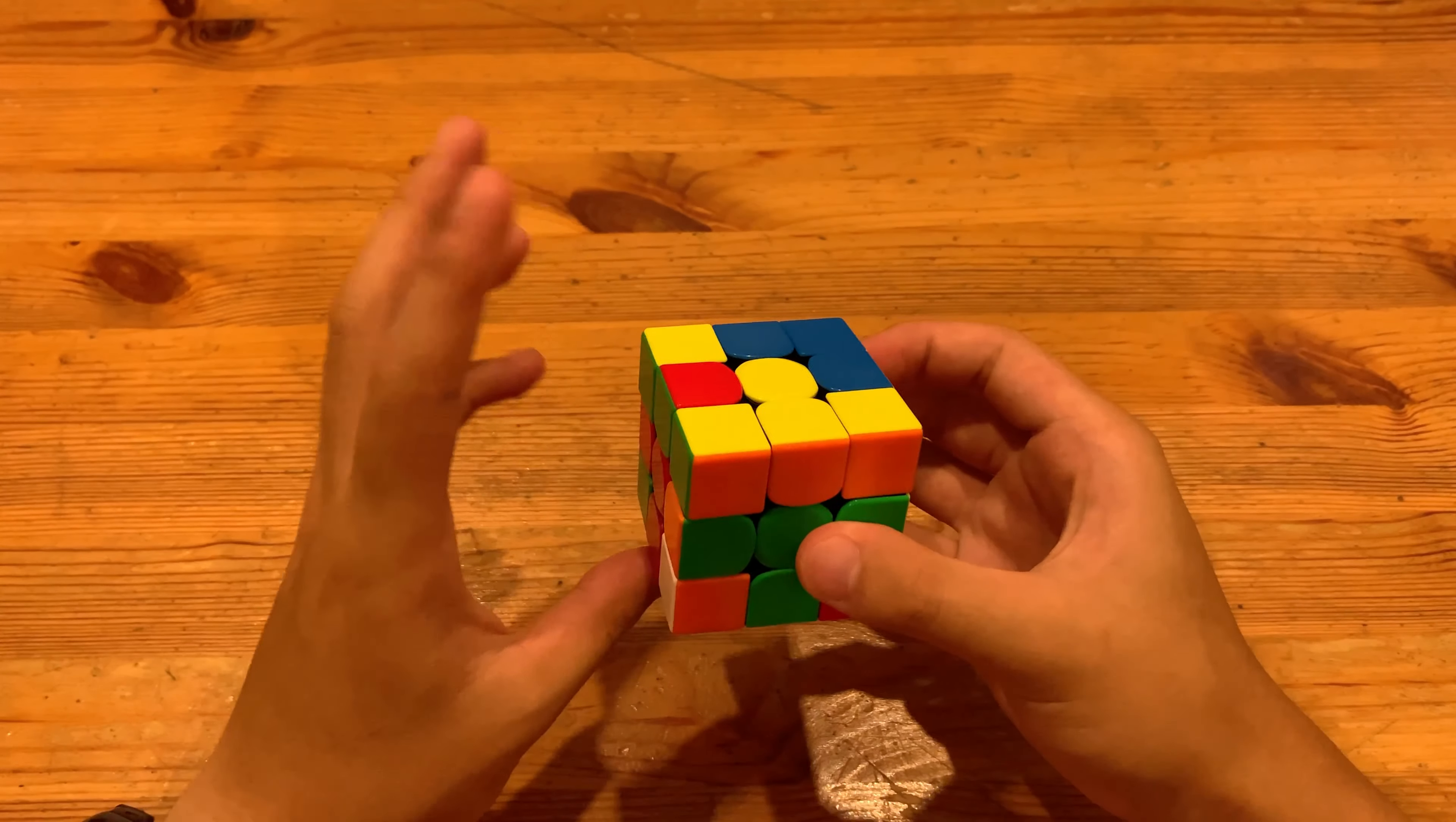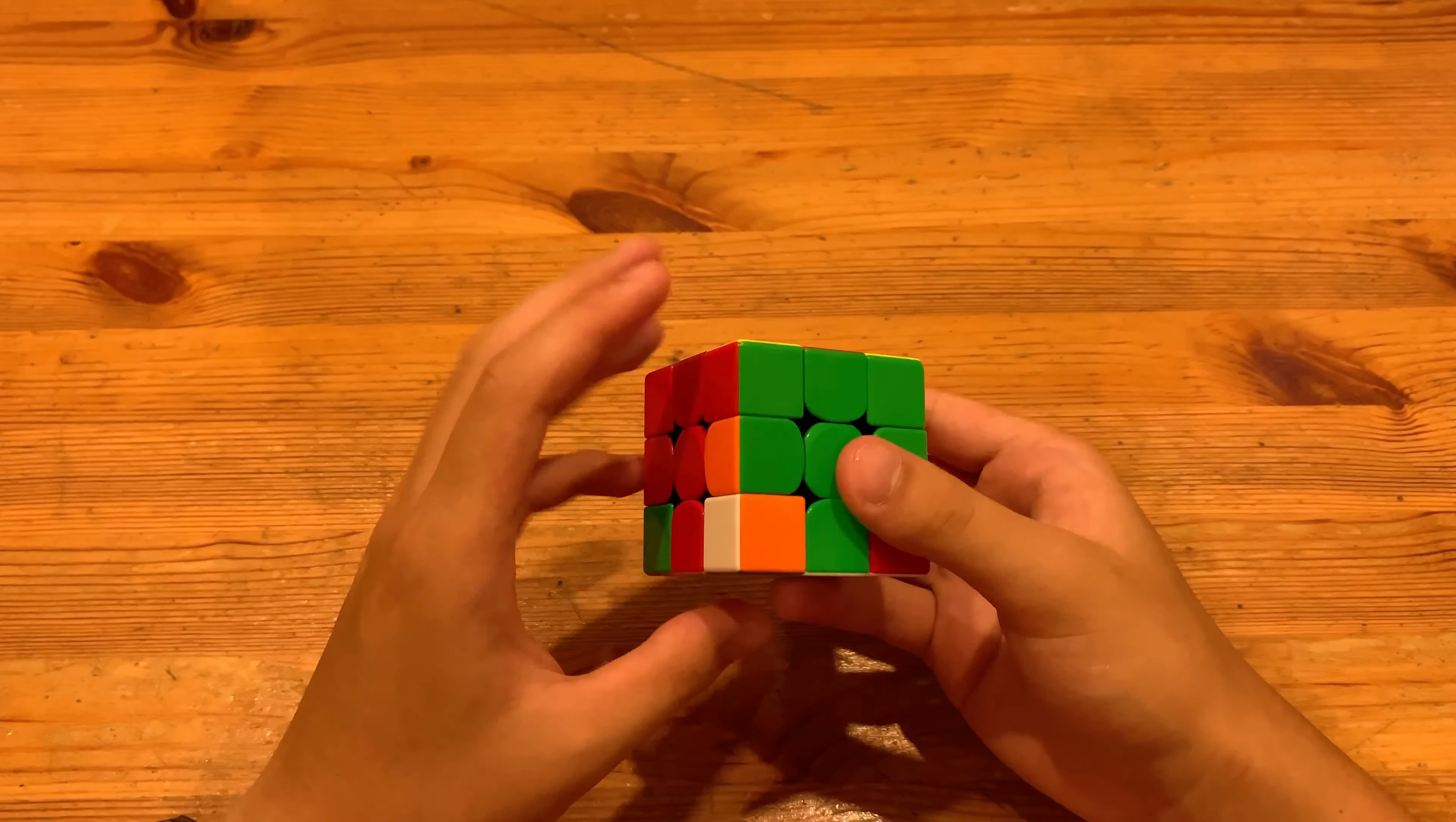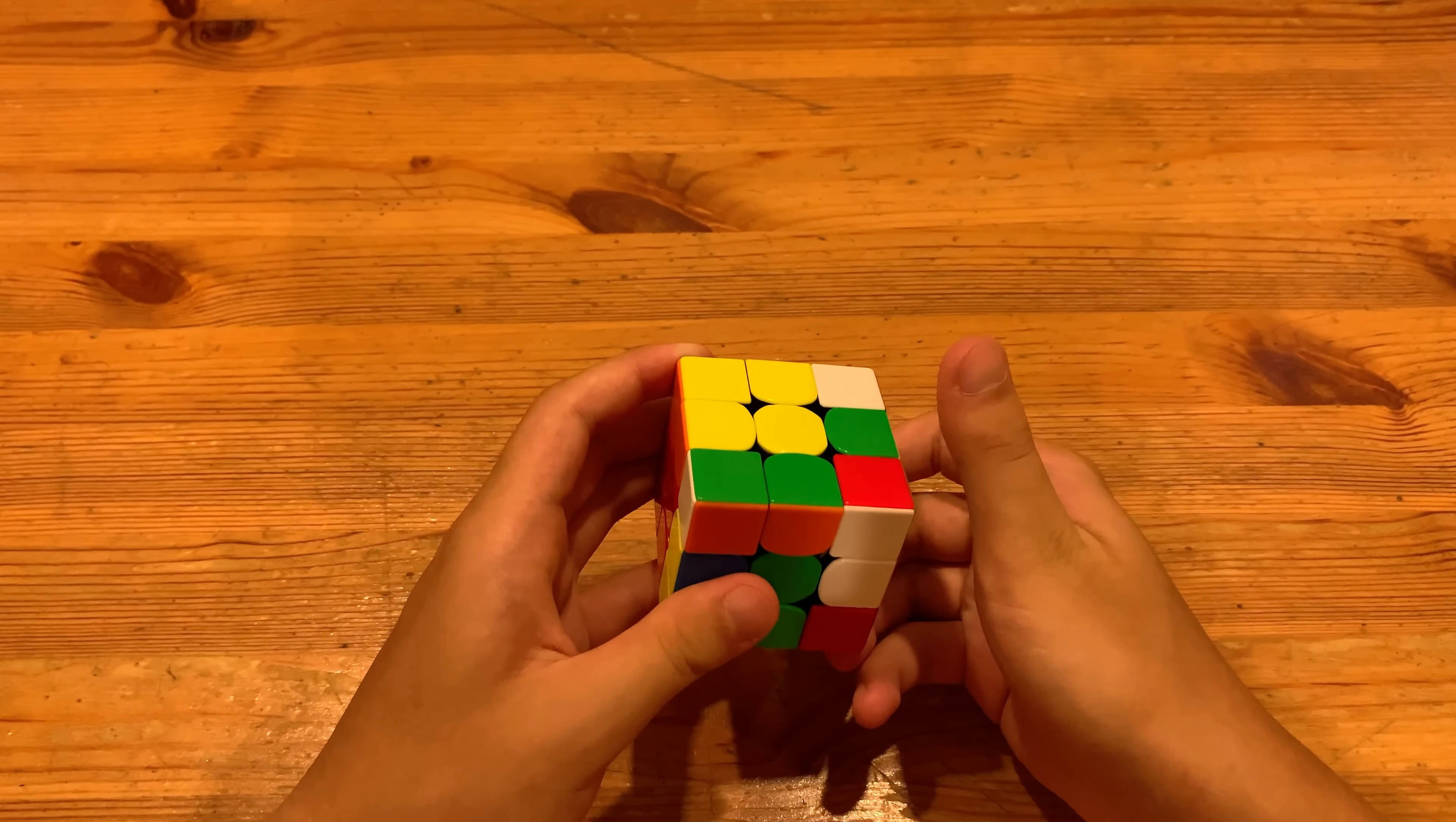And then next he solved this F2L pair, so he technically could have canceled like that but he didn't. And he did a U2, pair it up and then insert. And here you could have canceled into this pair, so pair it up like that and then insert but he didn't.